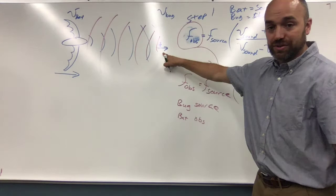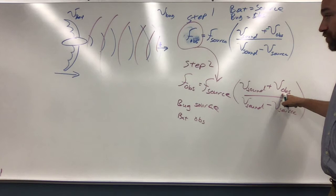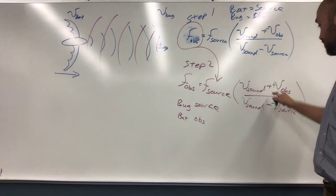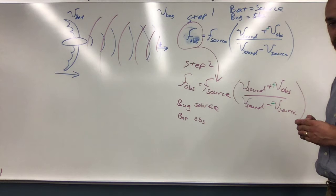Now for the second part here, notice they switched because the bug is the source and the bat is the observer now. So now this one, the observer which is the bat, that's going to be positive because the bat is going towards the bug. But the source is trying to go away from the bat, so it's a negative. So this is going to be plus a positive, and this is going to be minus a negative.